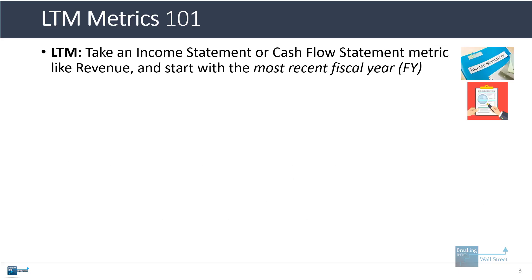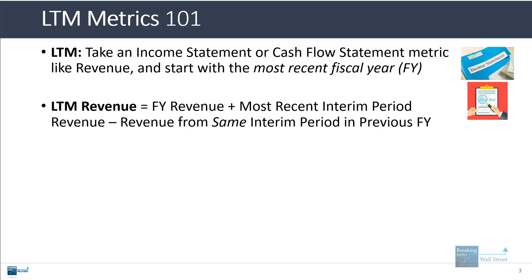To calculate the last 12 months of a metric, you take an income statement or cash flow statement number like revenue, and then you start with the most recent fiscal year of the company. To calculate the LTM version, you take that fiscal year number, add the most recent interim period revenue, and then subtract the revenue from that same interim period in the previous fiscal year. I'm going to show you a diagram to explain it, and then show you a calculation in Excel.